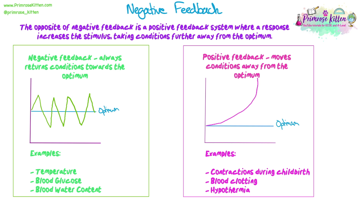Hypothermia is another positive feedback example. If your temperature drops too low too quickly for your body to bring it back up, your normal negative feedback can't fix your body temperature. Your body temperature gets too low, which causes your metabolic rate to become very low, meaning respiration and other reactions can't happen as fast, so they're not able to bring your temperature back up - and your temperature drops even lower. This is why hypothermia is so dangerous, because your normal body systems to restore temperature aren't able to work, and your reactions get slower and slower.